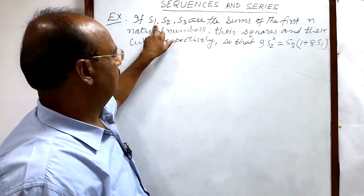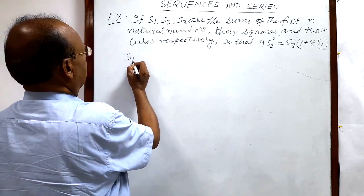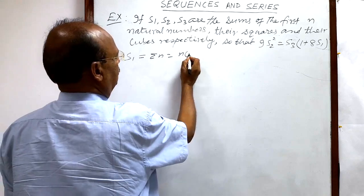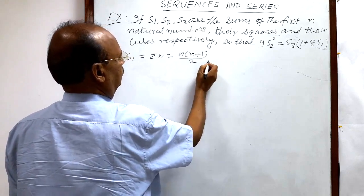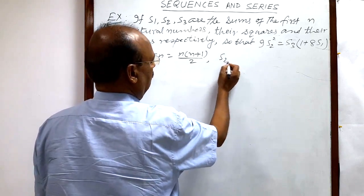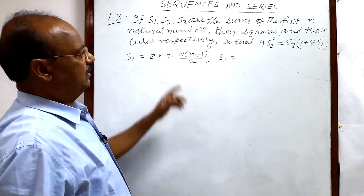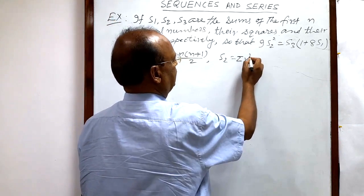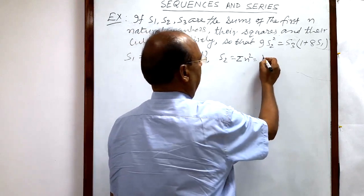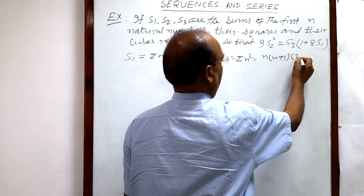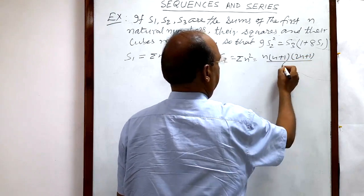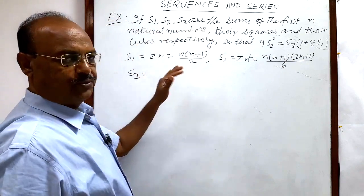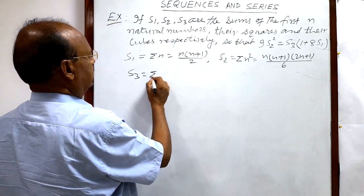We have already established some formulas. S1, the sum of first n natural numbers, written as sigma n, is n(n+1)/2. S2, the sum of squares of first n natural numbers, written as sigma n squared, is equal to n(n+1)(2n+1) divided by 6.